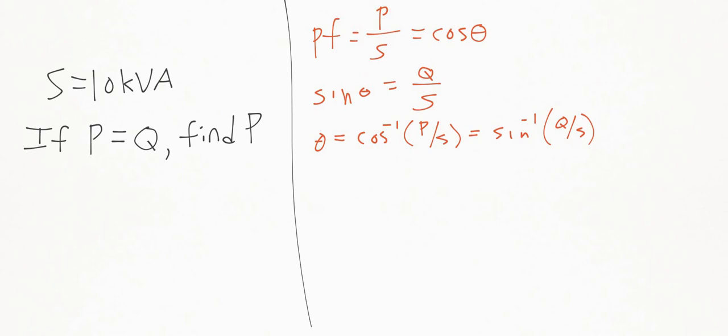And we know that S is 10 kVA, and we know that P is equal to Q. So we can simplify this further into arc cosine of P divided by 10 kVA is equal to the arc sine of another P, P is equal to Q, divided by 10 kVA.